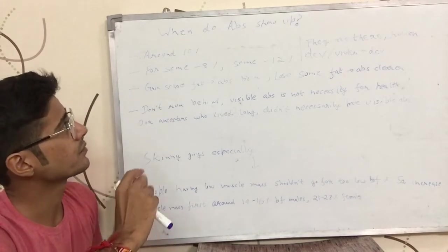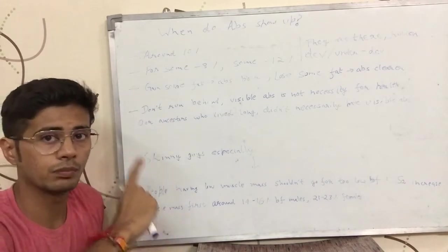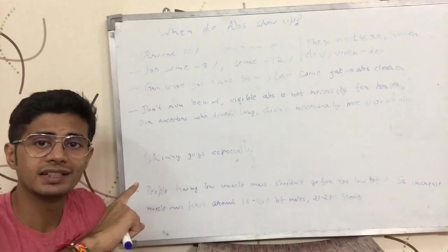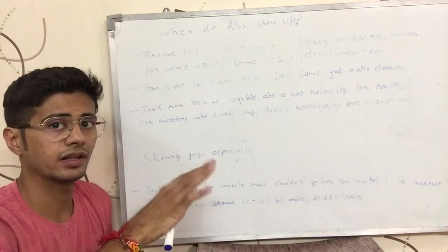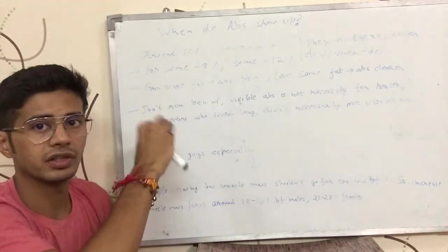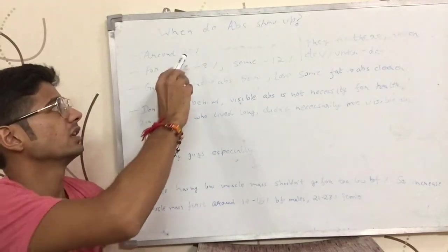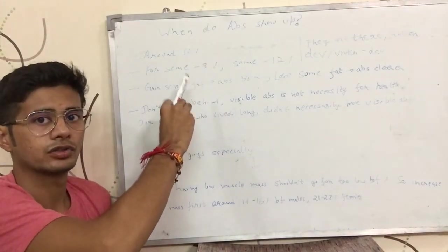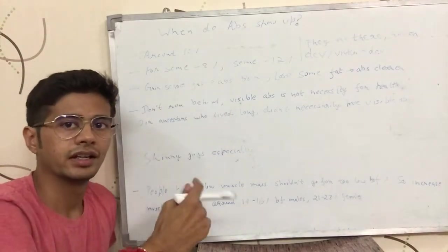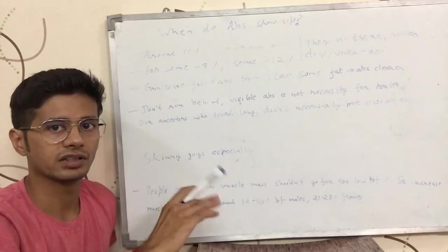So first of all, we are talking about males over here. The females can add 7 to 8% body fat to the number that we are talking for males. So for example, around 10% body fat, the abs of male should show up. So for a female, it should be around 17 to 18% body fat.